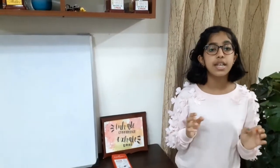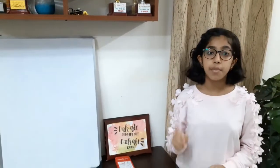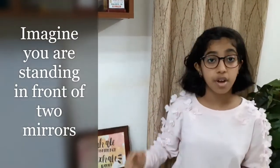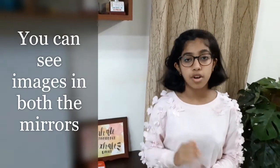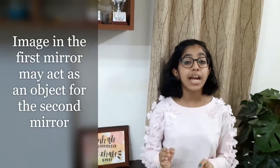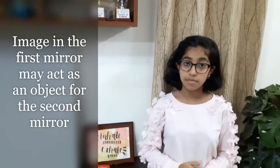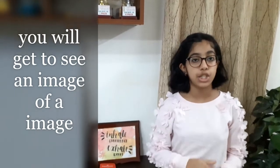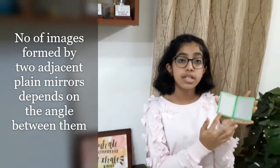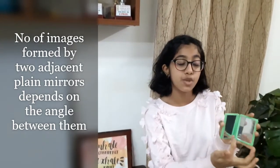Friends, we all have seen that when we look into a plane mirror we can see one image of ourselves. If standing in front of two plane mirrors, what will you get to see? You'll see images in both the mirrors. In addition, the image in the first mirror may act as an object for the second mirror. The second mirror forms an image of the image. Specifically, the number of images formed by two plane mirrors depends on the angle between them.